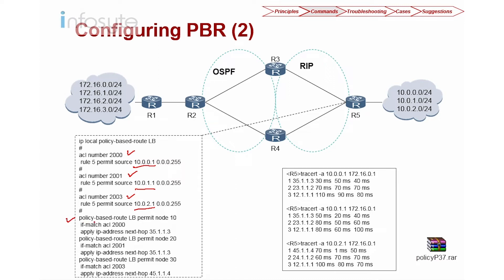To configure PBR we use 'policy based route' — not 'route policy'. Policy-based route is a forwarding plane decision, while route policy is a control plane tool. I match ACL 2000 with policy name 'LB'. If ACL 2000 matches (10.0.0.1), the next hop is Router 3. On node 20, I match ACL 2001 (10.0.1.1) with next hop 35.1.1.3. On node 30, I match ACL 2003 and send to Router 4. Then I apply it using 'IP local policy based route LB'.